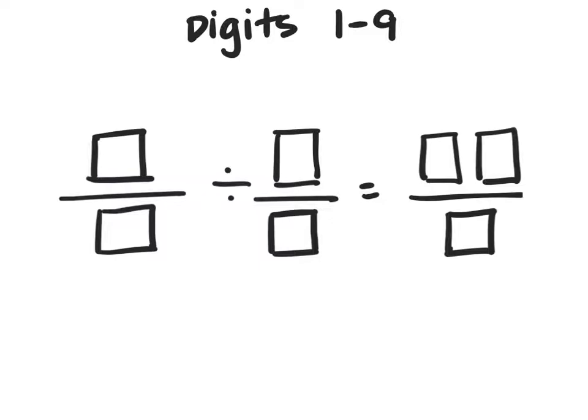So let's say I start with a fraction like one half. Since I can only use the digits 1 through 9, I'm going to think of an equivalent fraction to one half.